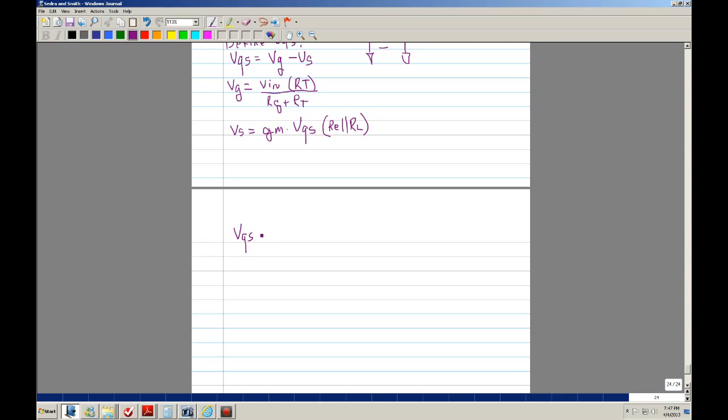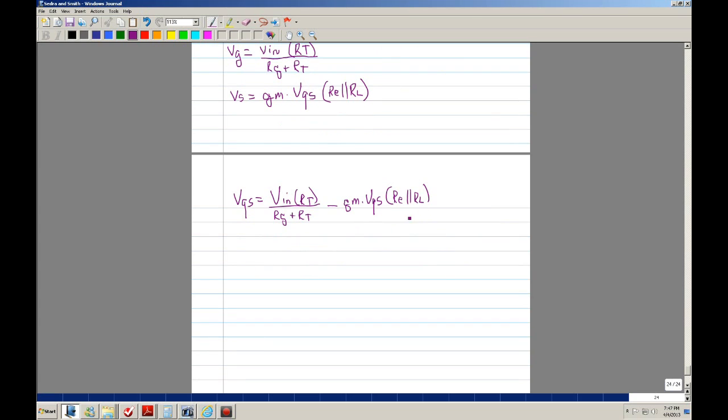So we try to plug that in. So we've got VN RT over RG plus RT, and it's going to be minus Gm VGS times RE in parallel with RL. If you notice, we have a VG here and a VGS here, so we solve for that.